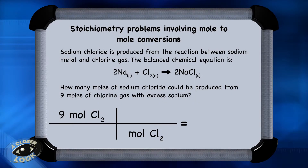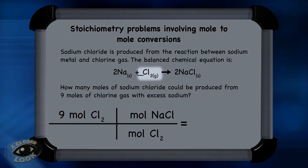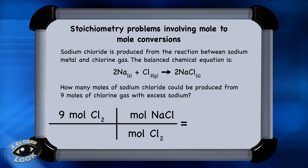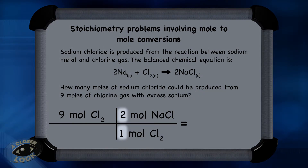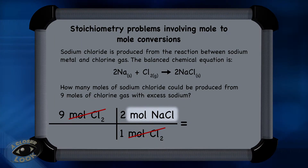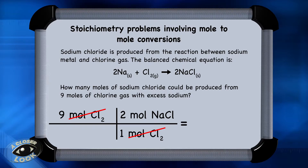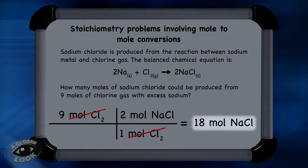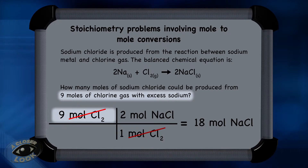You're converting from moles of chlorine to moles of sodium chloride. These numbers can be found from the mole ratios in the balanced equation. There's an understood 1 in front of chlorine and a 2 in front of the sodium chloride, so put those numbers into the conversion chart. Notice the units of moles of chlorine cancel and you're left with moles of sodium chloride, which is what the problem asked for. Multiply 9 times 2 divided by 1, which is 18, and you find that 18 moles of sodium chloride can be formed from the reaction of 9 moles of chlorine gas with excess sodium.